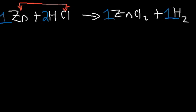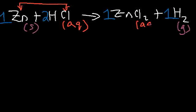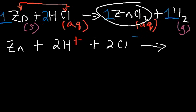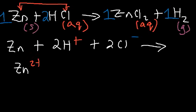Now we write the phases. Zinc is a metal, so it's a solid. Hydrogen is a gas. The other two compounds are aqueous — HCl is an acid and most acids dissolve in water, so they're in the aqueous phase. Zinc chloride is soluble; the only insoluble chlorides are silver, lead, and mercury. Now let's write the total ionic equation. Zinc, which is a solid, stays as is. In 2HCl we have two H+ ions and two chloride ions.